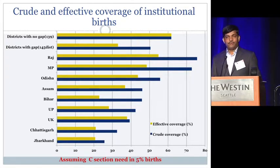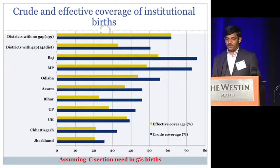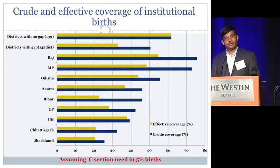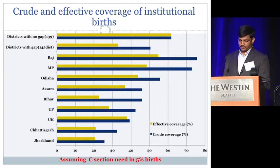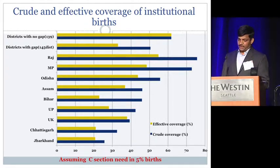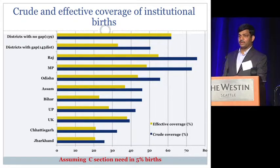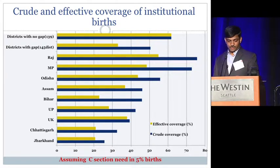In the remaining 145 districts, there was a gap of 18 percentage points between crude and effective coverage. This means that despite delivering in health facilities, about 36% of mothers did not have access to EMOC. Disaggregated by province, this gap ranged from 1 percentage point in Uttarakhand to 25 percentage points in Madhya Pradesh.